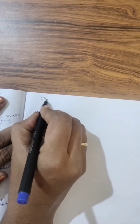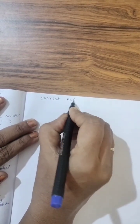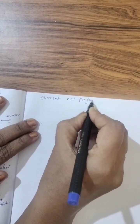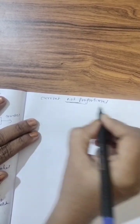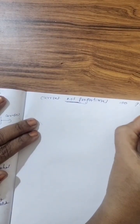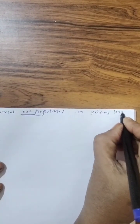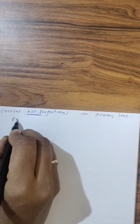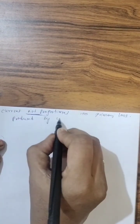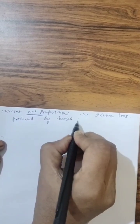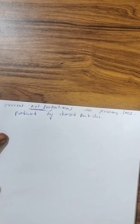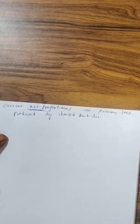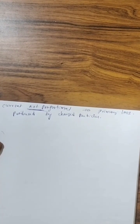This current produced is not proportional to the primary ions produced by the charged particles. This current, which has increased by the emission of secondary electrons, is not proportional to the primary ions produced by the charged particles.